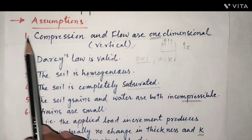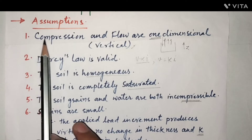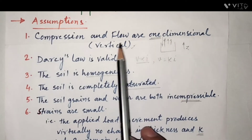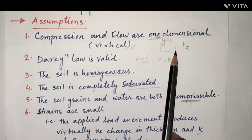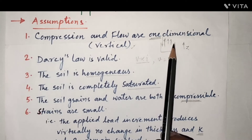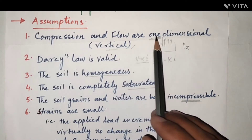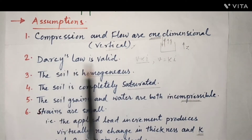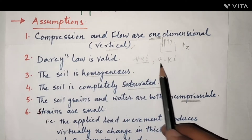Before the actual theory, Terzaghi assumed that compression and flow are one-dimensional, that is vertical. As seen in the last class, the piston moves downward and water escapes upward, so movement is only in the vertical direction — that is one-dimensional. The second assumption is that Darcy's law is valid: V is proportional to i, that is V = ki.